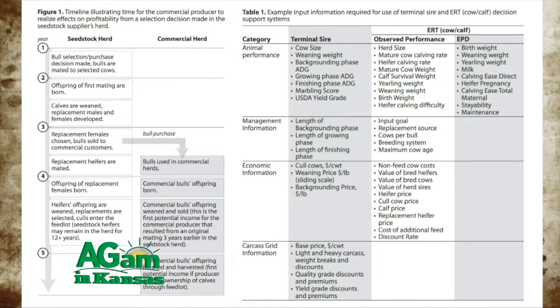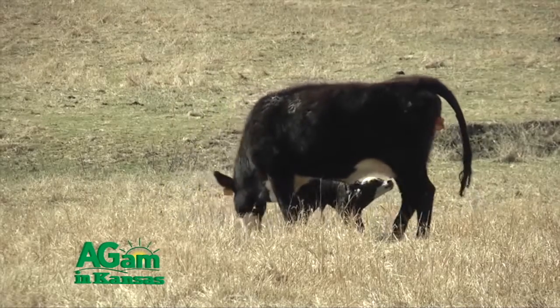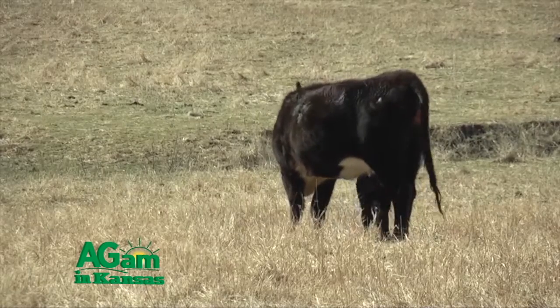One trend in the industry is selection for high-spread bulls — those with a low birth weight EPD but high yearling weight growth. Those traits are unfavorably related, but with the tools we have, we've been able to break that correlation and select animals with low birth weight but higher growth. The same approach could be applied to reduced maintenance energy. A current weakness is that we're not getting enough data from seed stock producers on cow size, so better reporting rates are needed. Genomics may also be used in the future to make more accurate selection decisions.